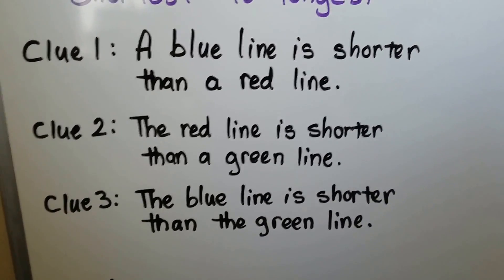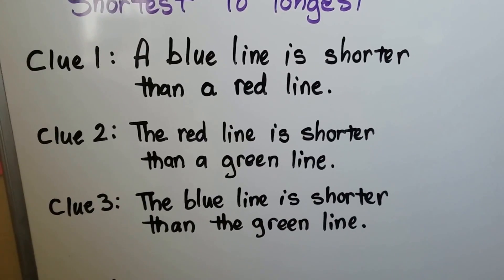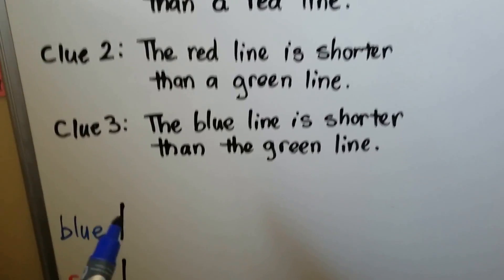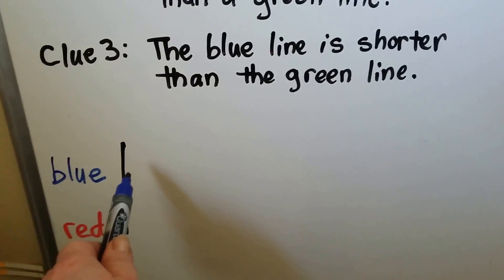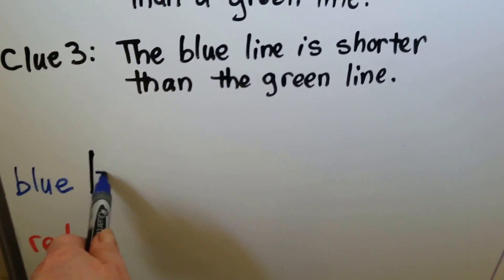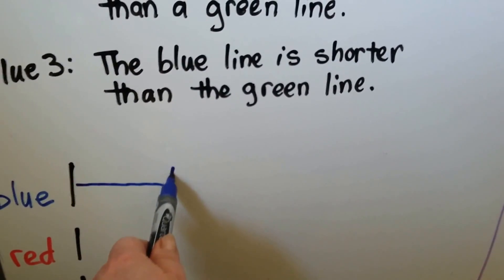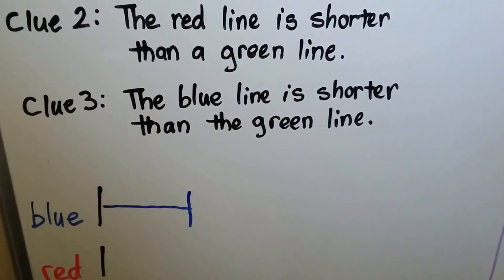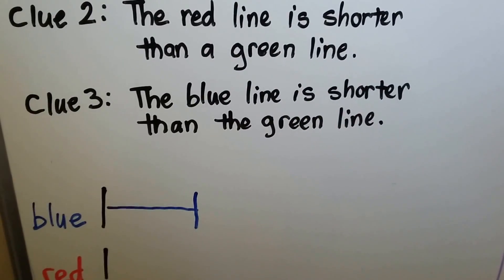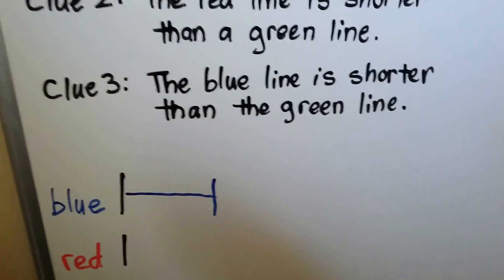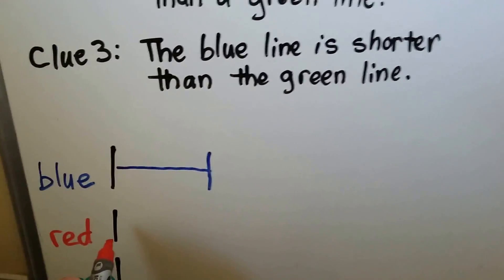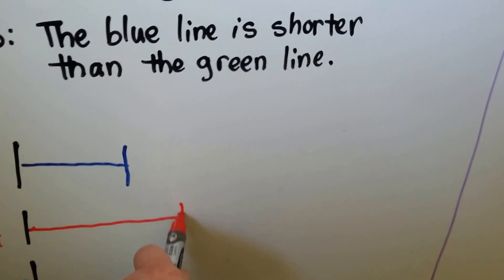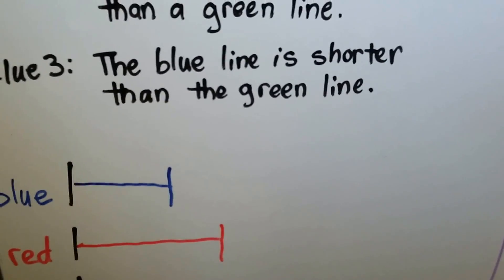We can draw the lines using the clues. A blue line is shorter than a red line, so we can draw a blue line. We know it's going to be shorter than the red one, so we're not going to make it very long. Then we make the red line a little bit longer so the blue one is shorter.